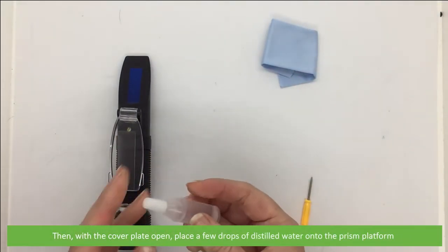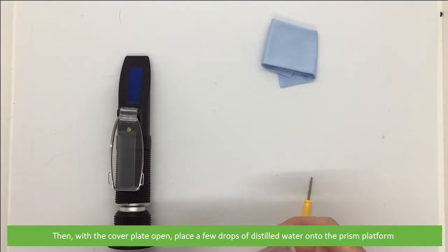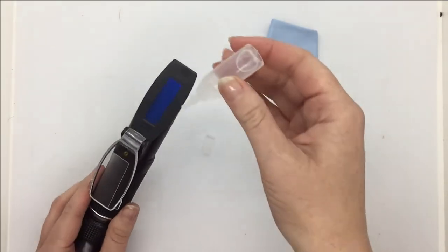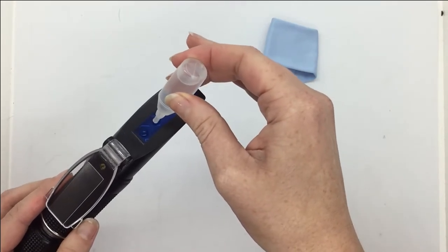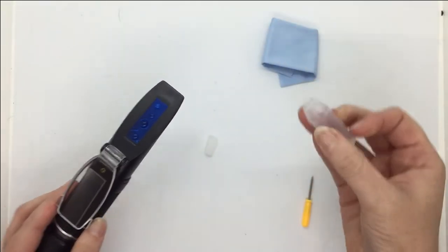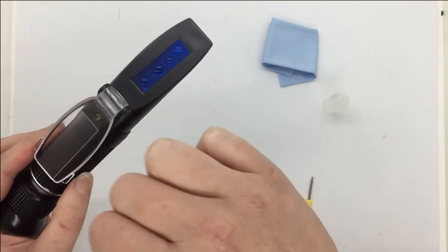Then with the cover plate open, place a few drops of distilled water onto the prism platform. Close the cover plate.